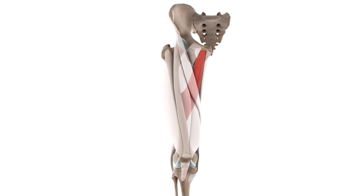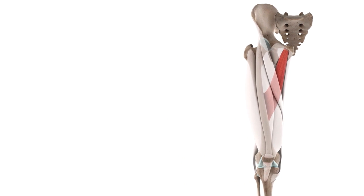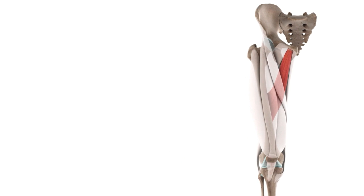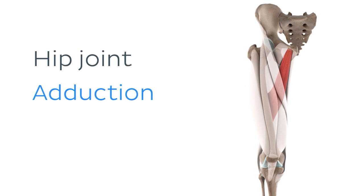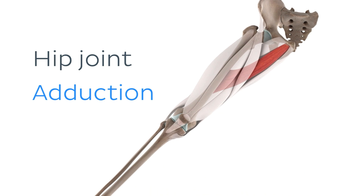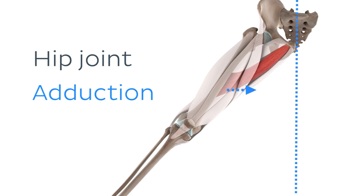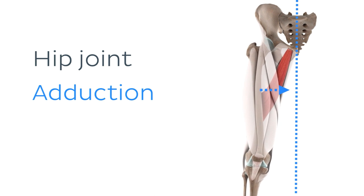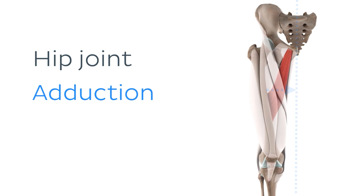Now we're ready to move on to the functions of the adductor longus muscle. We are going to look at three main actions which this muscle is involved in. The first function is no surprise, and as its name suggests, the adductor longus muscle is primarily involved in adduction of the thigh at the hip joint, meaning it acts on the hip joint to move the thigh medially or towards the midline of your body, as you can now see on the screen.